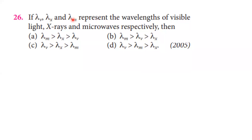If lambda-v, lambda-x, and lambda-m represent the wavelengths of visible light, X-ray, and microwave respectively, comparing their wavelengths: X-rays have the smallest wavelength, visible light has a larger wavelength than X-rays, and microwaves have the largest wavelength. Therefore option B is correct.